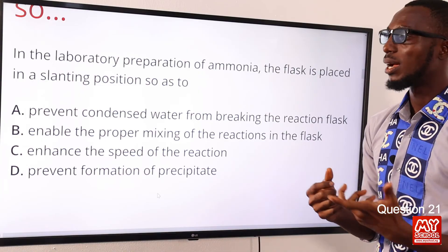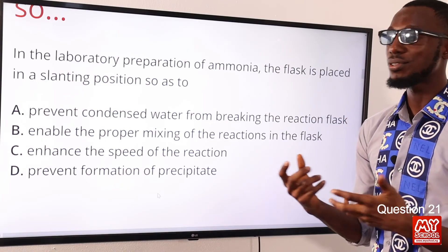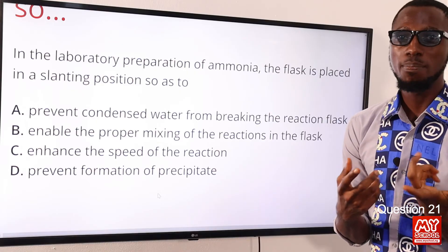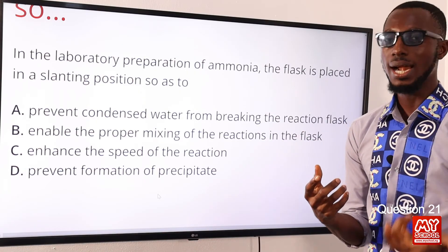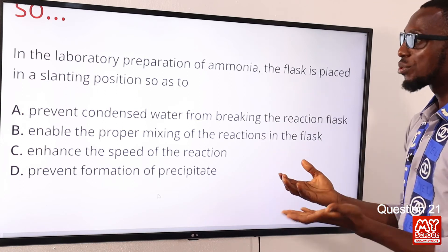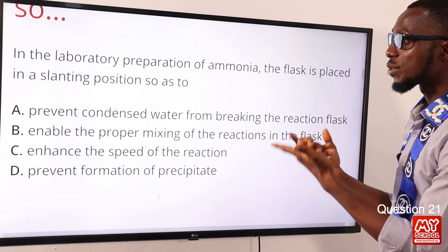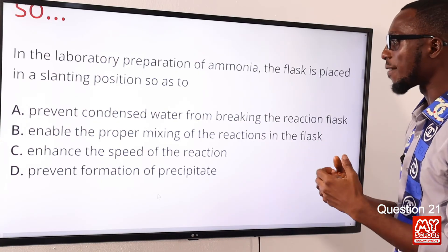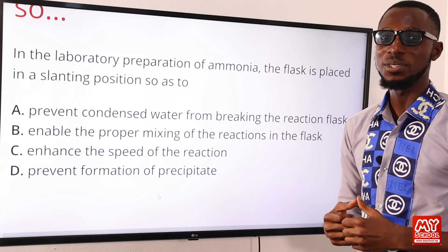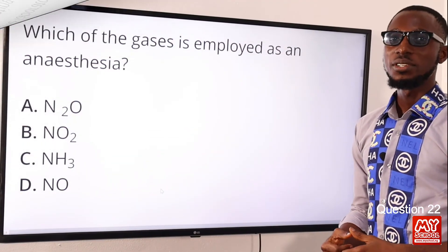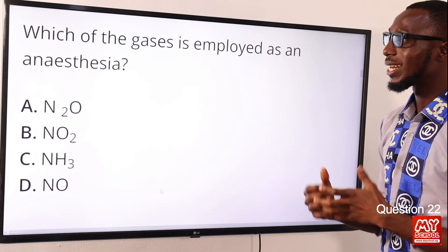Question twenty-one: in the laboratory preparation of ammonia, the flask is placed in a slanted position so as to do what? It is slanted so that the water formed during the reaction does not trickle back into the hot parts of the flask, which could lead to cracking. Scanning through the options, option A states: so as to prevent condensed water from breaking the reaction flask. Option A is the correct option.